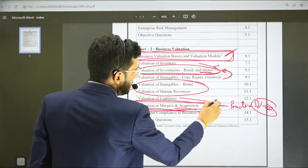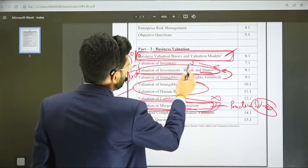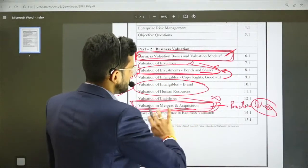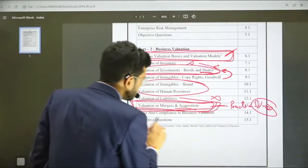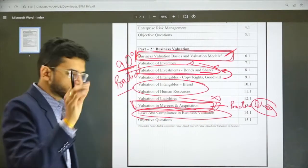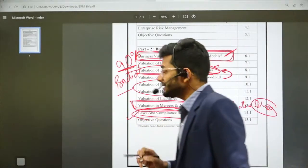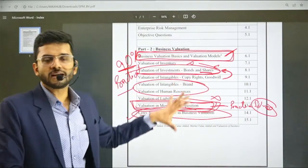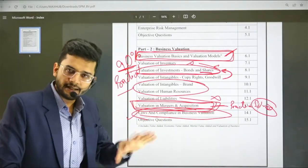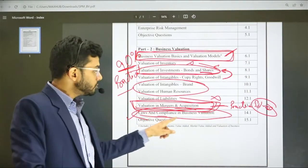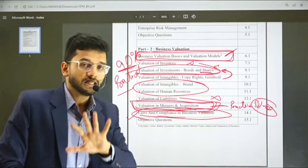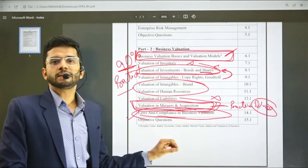You can leave liabilities chapter. You can leave inventory chapter. These are not very important chapters. For syllabus 2022 students, there's a new chapter which has been inserted, law and compliances, which relates to Mergers and Acquisitions of India, of the Companies Act. This chapter you've already studied in law in group 3. It's the same concept here.